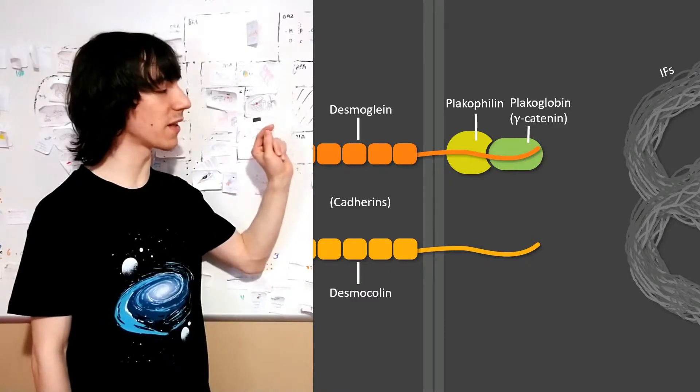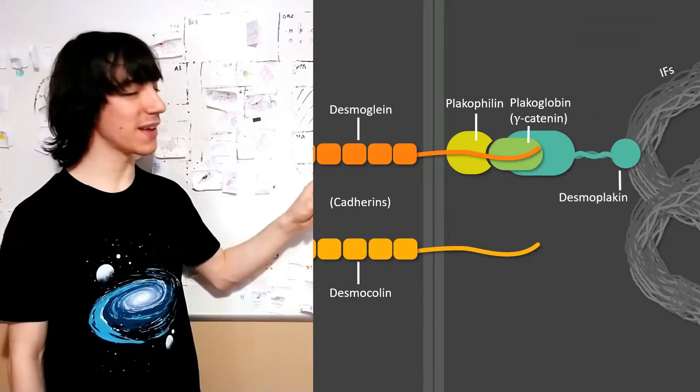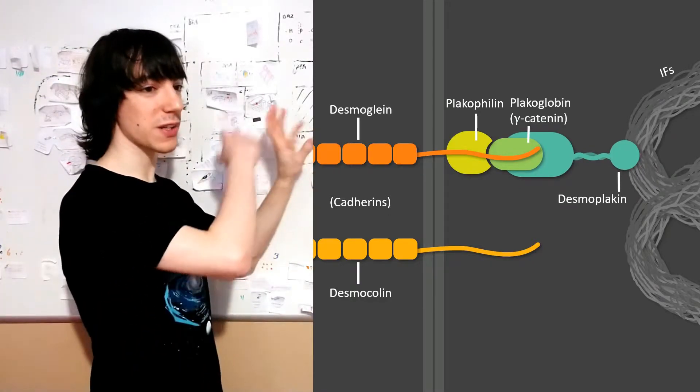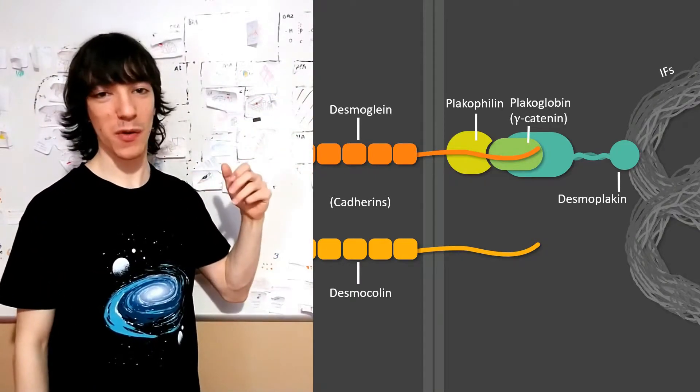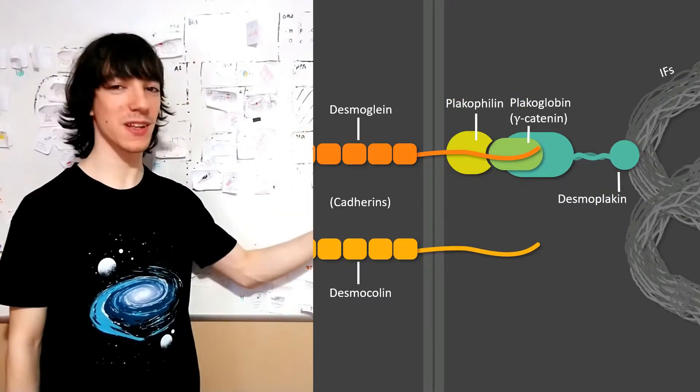And we have desmoplakin, which can interact with both this complex of cadherins and the other plakophilin and plakoglobin, and it can also interact with intermediate filaments, bringing all of those things together.